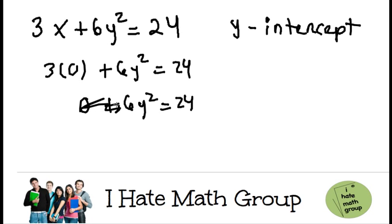Basically it's just the same as this. Now I'm going to divide by 6 and then I get y squared equals 24 divided by 6 is going to be 4. And in order for me to eliminate the square, I'm going to square root both sides.